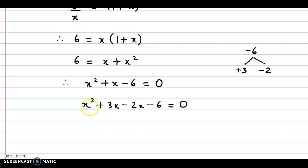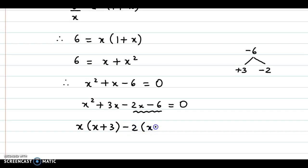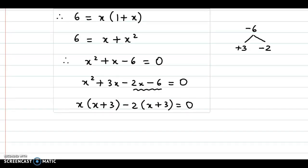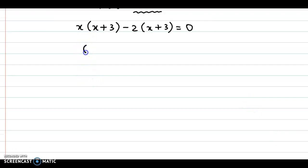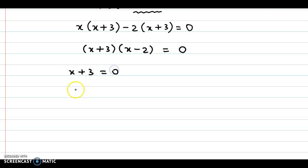Taking X common in the first and second terms, we have X into X plus 3. And taking minus 2 common from the third and fourth terms, we have minus 2 into X plus 3 is equal to 0. So we have the two factors now: X plus 3 and X minus 2, equal to 0. If we consider X plus 3 equal to 0, we obtain X as minus 3. So the first value of X is minus 3.